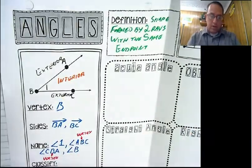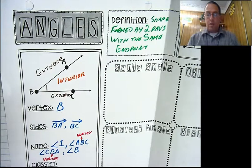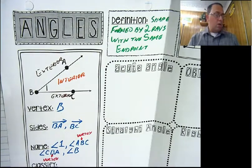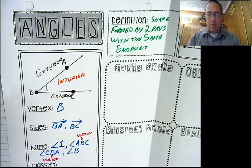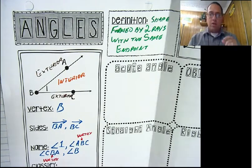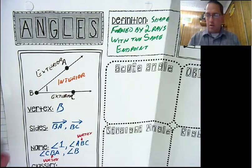Now, what about points A, B, and C? Those points are on the angle. They're not inside the angle. They're not outside the angle. They are on the angle.